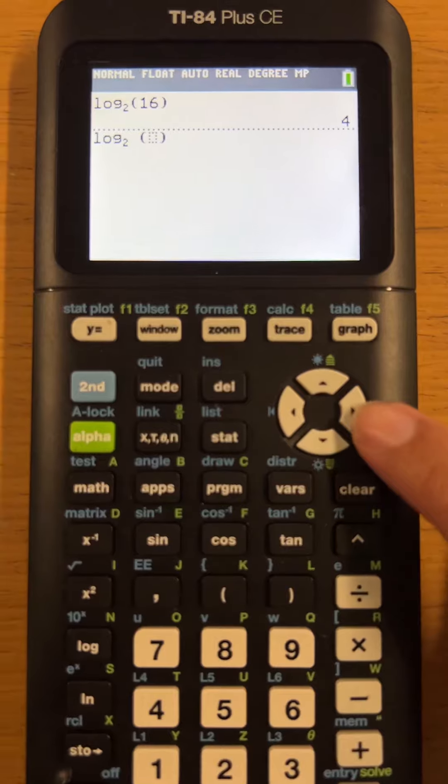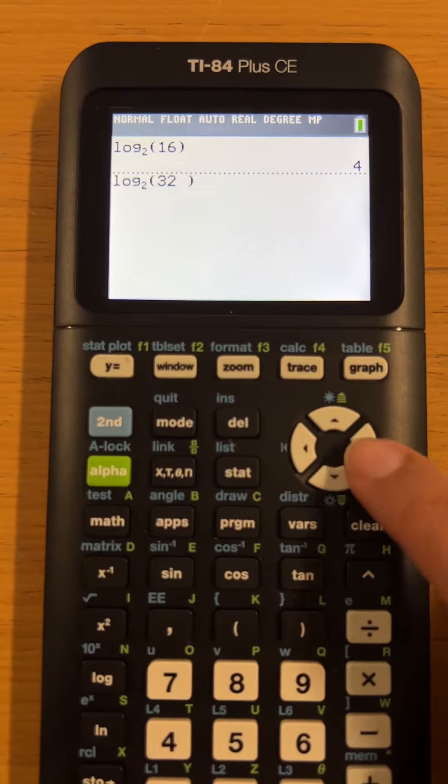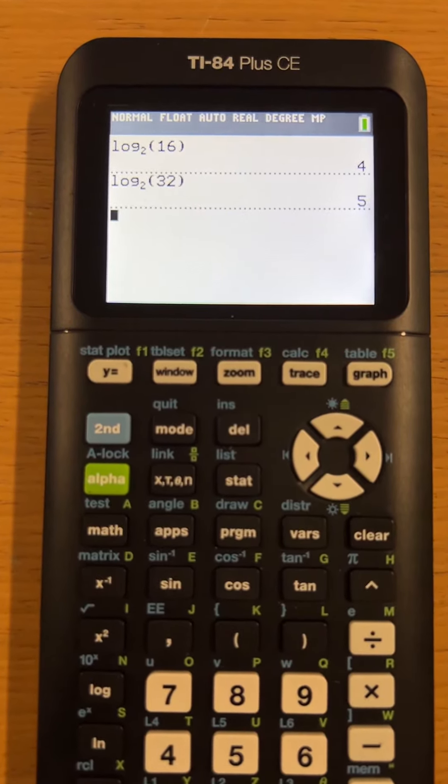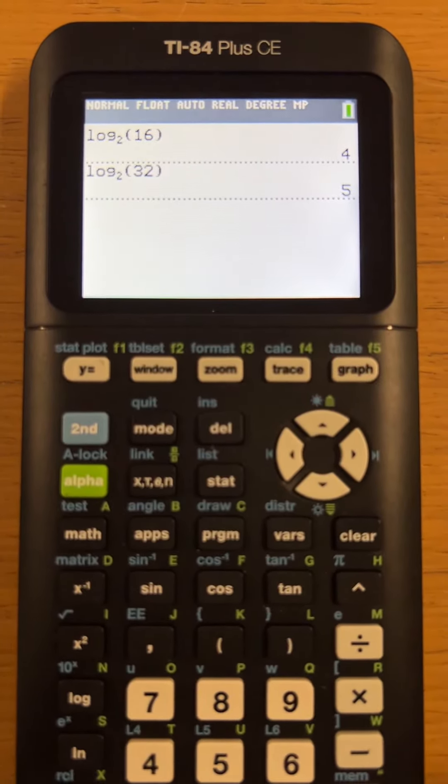Log base two of 32 is what number? Is five. That makes sense because two raised to five is 32. There you go.